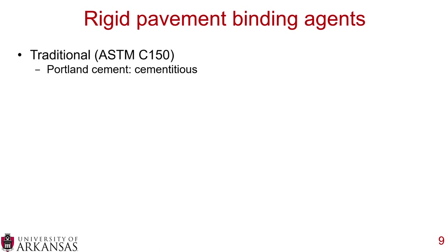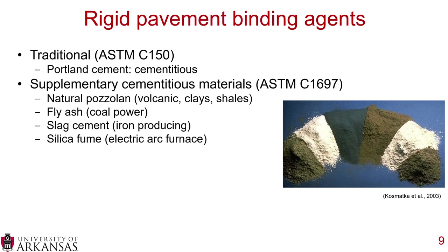According to ASTM C150, Portland cement is the cementitious material that holds the aggregate together in rigid pavements — or more accurately, the aggregates float in the Portland cement matrix. However, per ASTM C1697, supplementary cementitious materials can replace Portland cement, including natural deposits like volcanic aggregates, clays, and shales; fly ash from coal power; slag cement from iron production; and silica fume from electric arc furnaces.